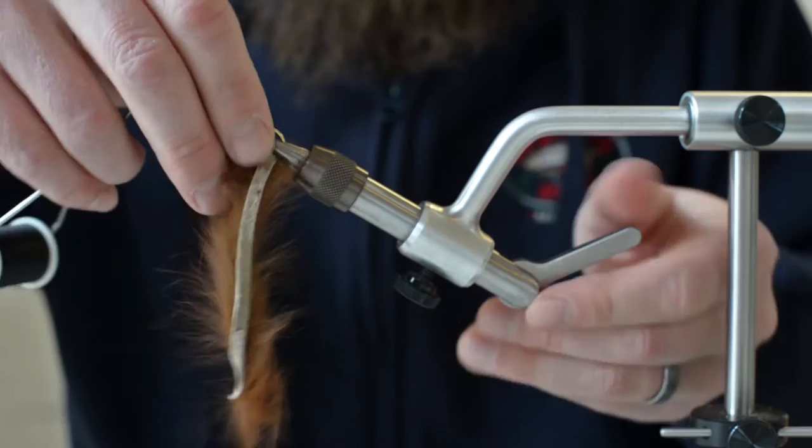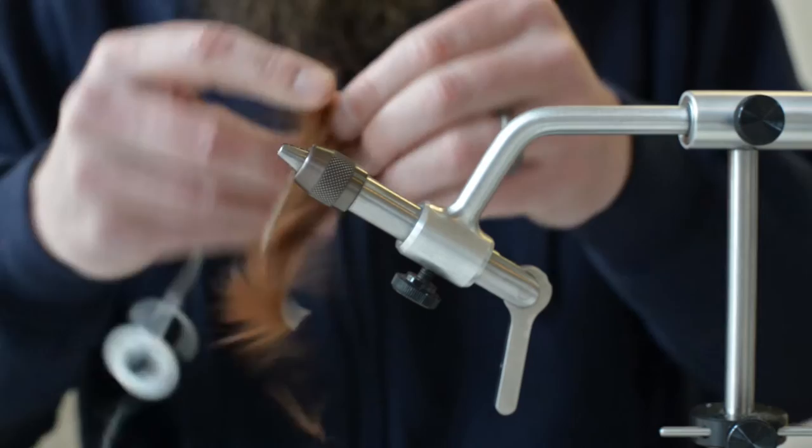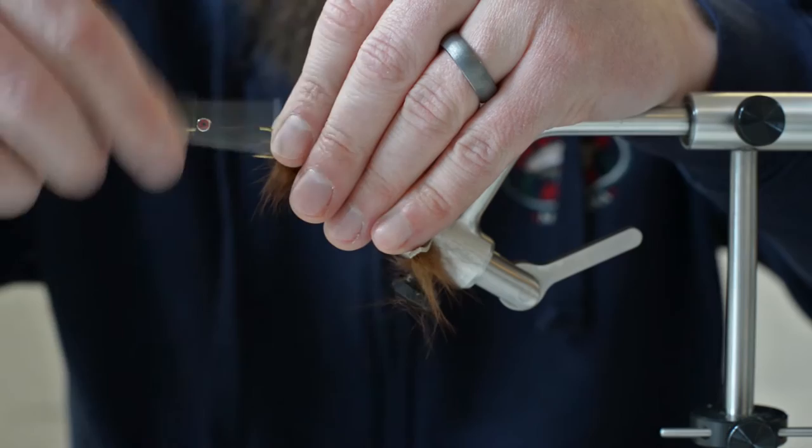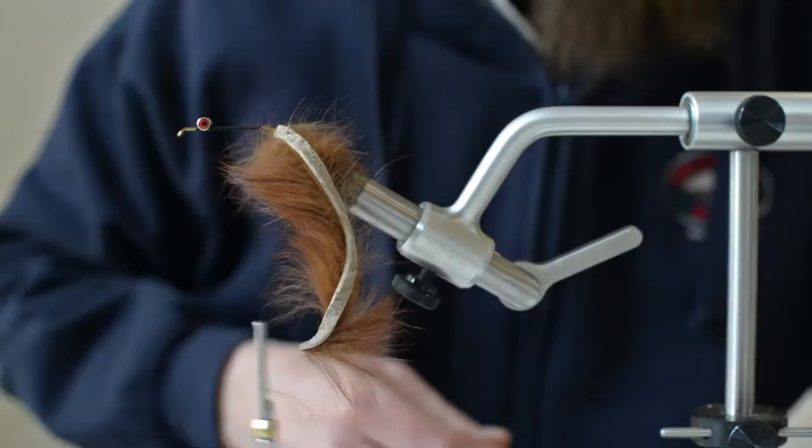Poke it through and then take the hook out of your vise and slide it around the rest of it. Put it back in the vise.